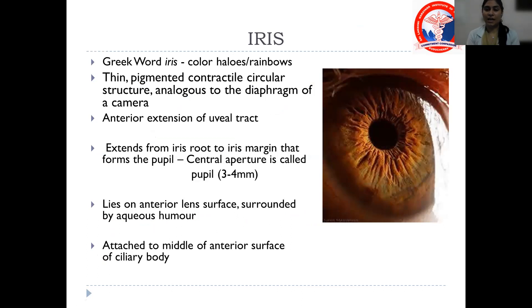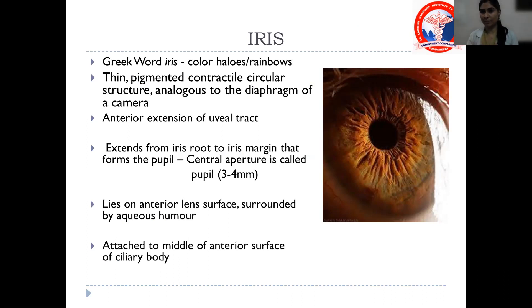Now the iris. The word 'iris' is a Greek word meaning color, halos, or rainbows. It is a thin, pigmented, contractile circular structure, analogous to the diaphragm of a camera. It is the anterior extension of the uveal tract, which was divided into the iris, the ciliary body, and the choroid. So the anterior part is the iris.